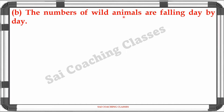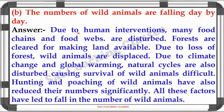Question B: The number of wild animals is falling day by day. Answer: Due to human intervention, many food chains and food webs are disturbed. Forests are cleared to make land available. Due to loss of forest, wild animals are displaced. Climate change and global warming also contribute. Natural cycles are also disturbed, making survival of wild animals difficult. Hunting and poaching of wild animals have also reduced their numbers significantly. All these factors have led to a fall in the number of wild animals.